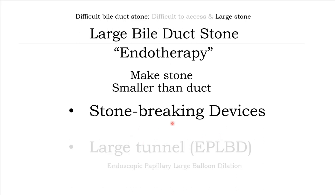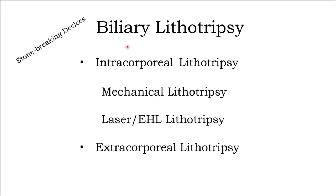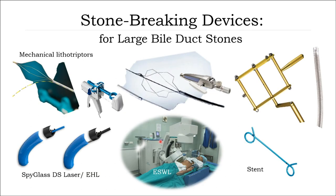Let's start with stone-breaking devices. There are two techniques: intracorporeal lithotripsy and extracorporeal lithotripsy. Intracorporeal lithotripsy — you can use mechanical lithotripsy, laser, or ESL lithotripsy under vision. For extracorporeal lithotripsy, commonly used devices include the Trapezoid by Boston, BML by Olympus, and the Soehendra Roth-Scale Retrieve Lithotripter by Cook, and SpyGlass cholangioscope with laser and even plastic stent.